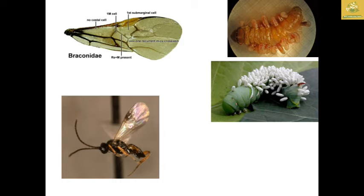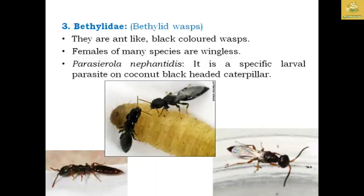The family Mutillidae comprises ant-like, black-colored wasps. Females of many species are wingless while males are winged. Example: Pseudophotopsis nafractitis, a specific chloroparasite on coconut black-headed caterpillars.